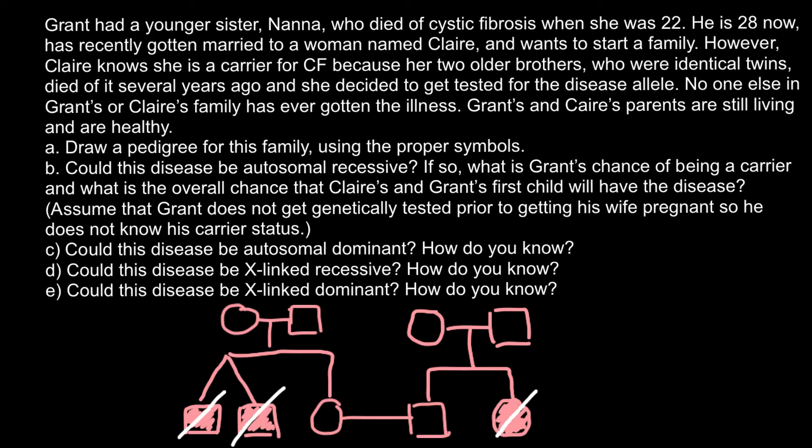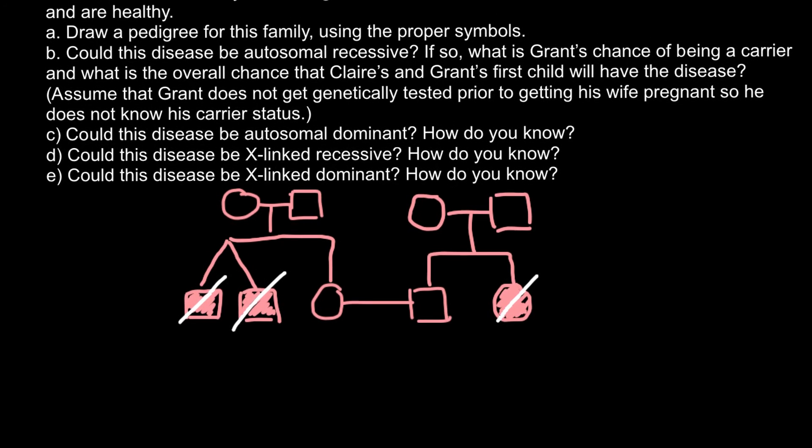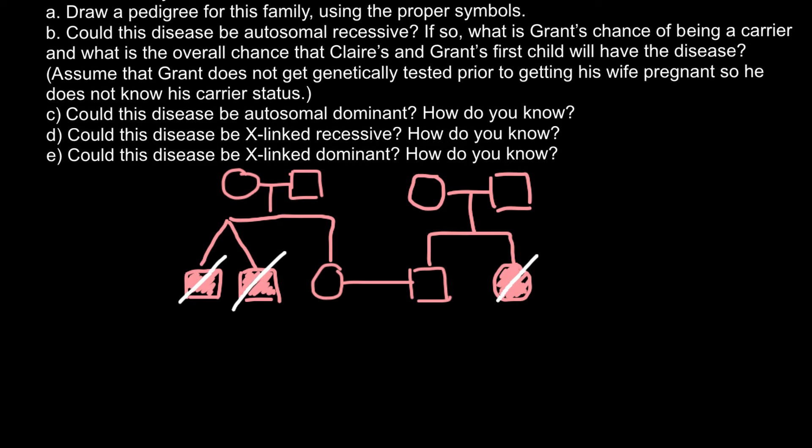Now our pedigree contains all the information we need to answer the remaining questions, and we don't need the verbal problem description anymore. We have given the answer for question (a). Moving to question (b): could this disease be autosomal recessive? If so, what is Grant's chance of being a carrier, and what is the overall chance that Grant's and Claire's first child will have the disease? Both sets of parents don't have this genetic disorder, so they must be carriers.